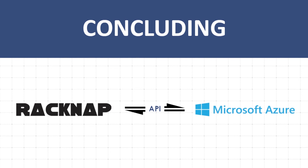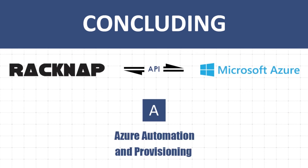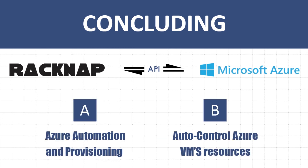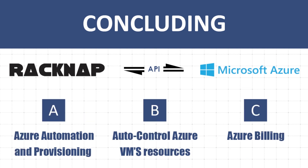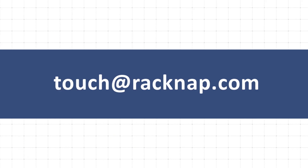In conclusion, Ragnap integrated with the Azure API helps you with: A. Azure Automation and Provisioning, B. Auto-control over Azure virtual machine resources, and C. Azure Billing. Should you have any concerns regarding this demonstration, simply drop an email at touch@ragnap.com and we shall have your concerns looked into.